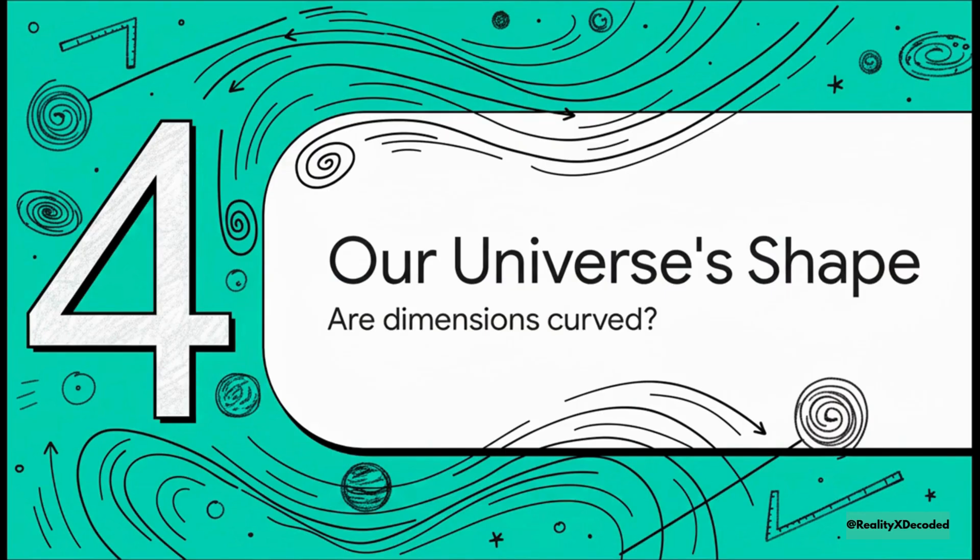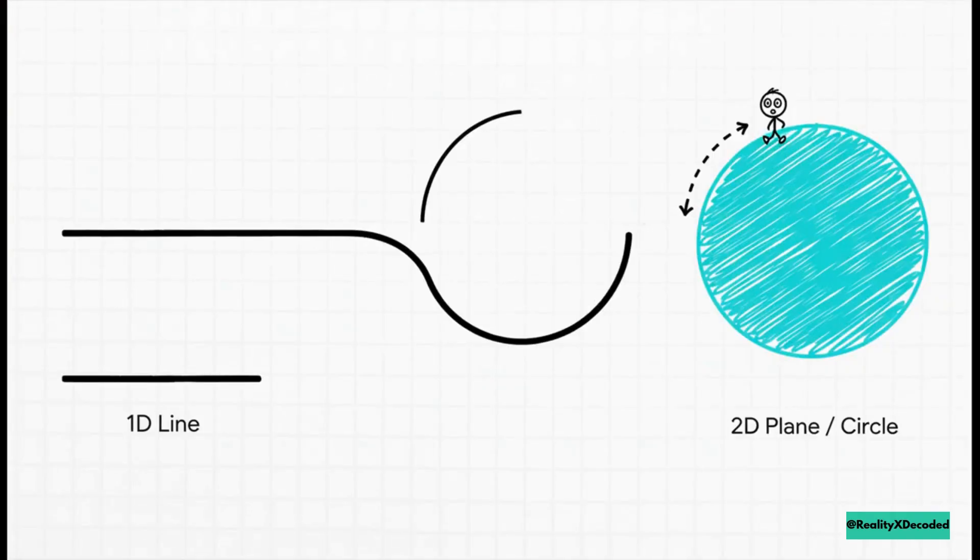What if all the straight lines and flat planes we've been using as examples aren't telling the whole story? What if the dimensions themselves are curved? Let's go all the way back to our one-dimensional line. Now imagine it has a very, very slight curve to it. So slight, you wouldn't even notice it up close. If you travel along that line for a long, long time, you'll eventually loop all the way around and end up right back where you started. That 1D line has curved through the second dimension to form a circle.